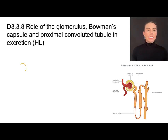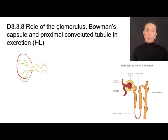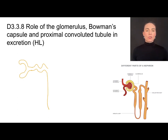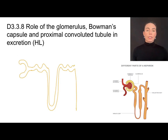I start off with this C-shaped structure called Bowman's capsule. It leads into a structure called the proximal convoluted tubule — proximal means close, it's close to Bowman's capsule, and convoluted means twisty. That proximal convoluted tubule then dips down into a structure called the loop of Henle, which leads into the distal convoluted tubule, which then leads into the collecting duct.